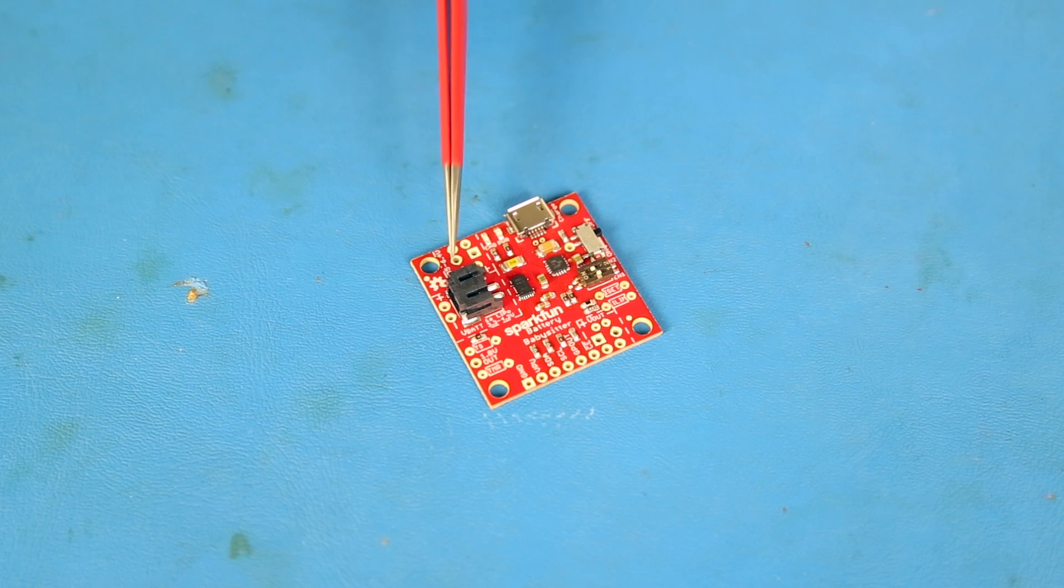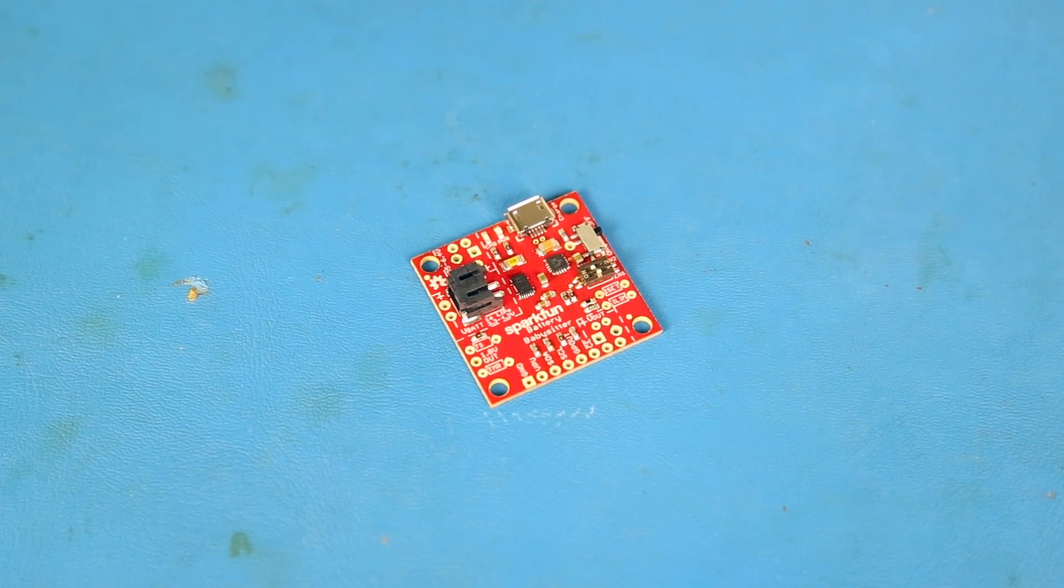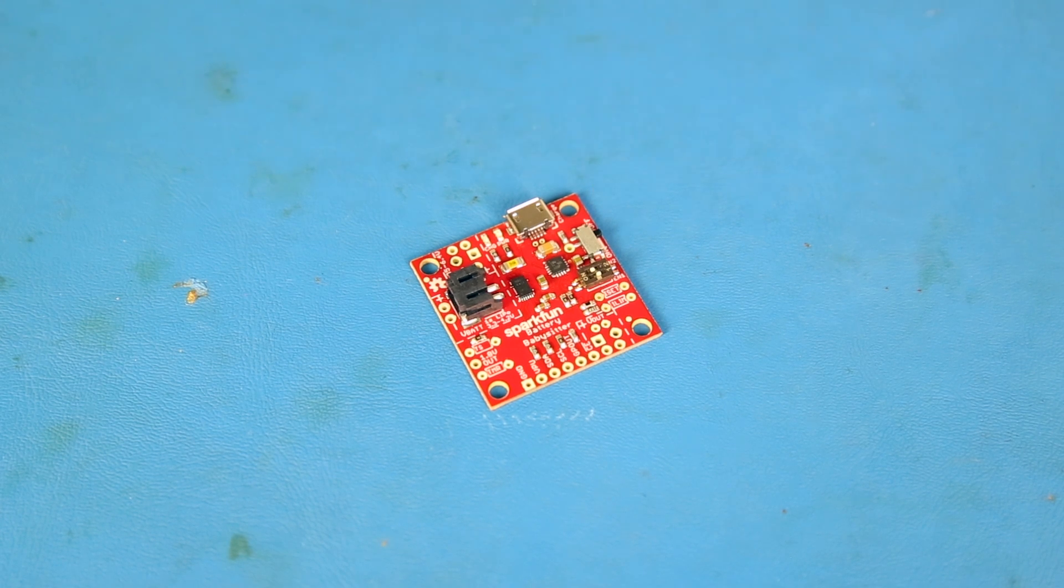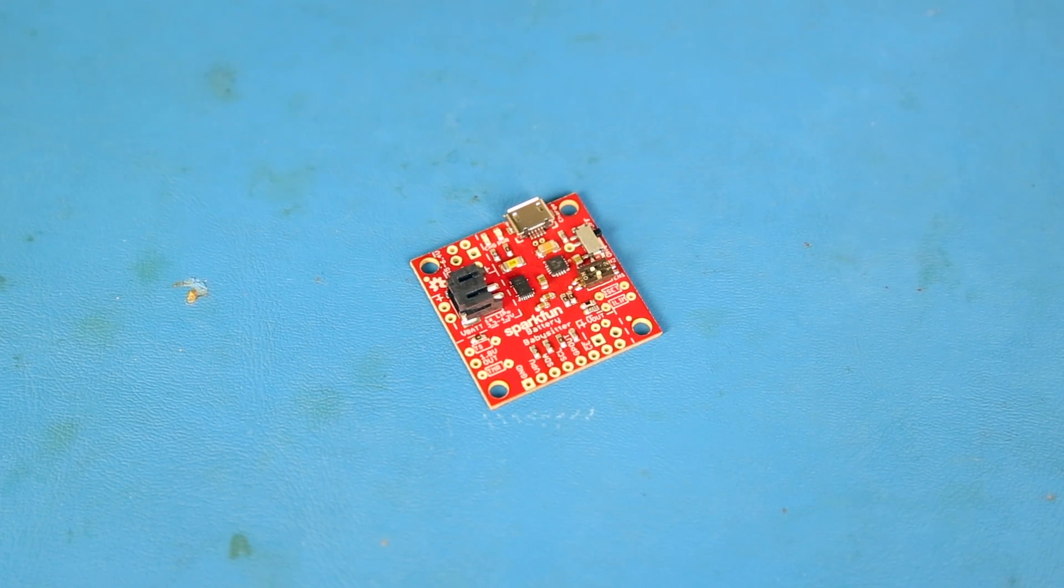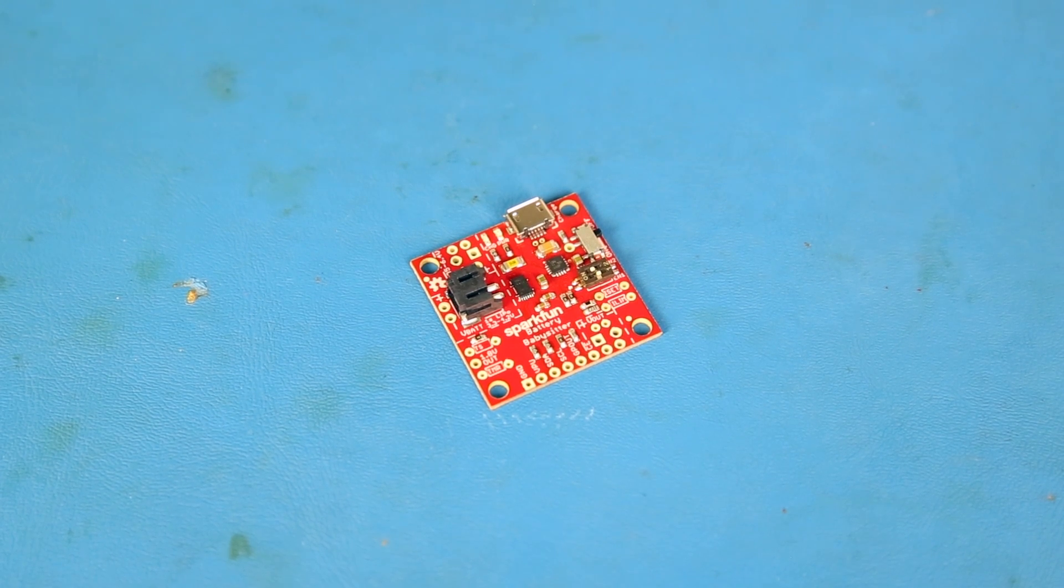Up close, you'll see a JST connector for your single cell LiPo, a micro USB for charging your battery, an on-off switch that can disconnect the battery from your project and disable charging, a set of dip switches that allow you to select 100mA, 500mA, and 1.5A charge rates.